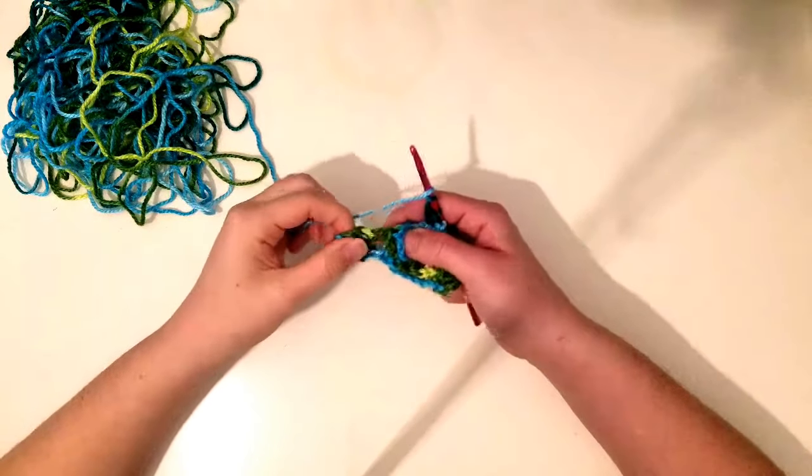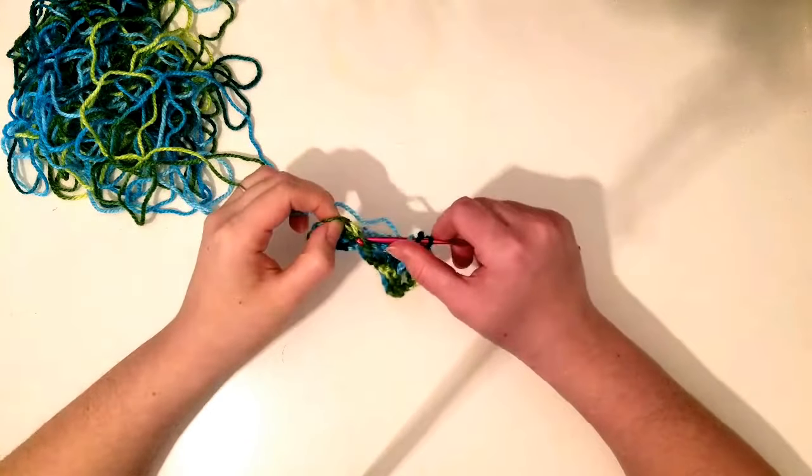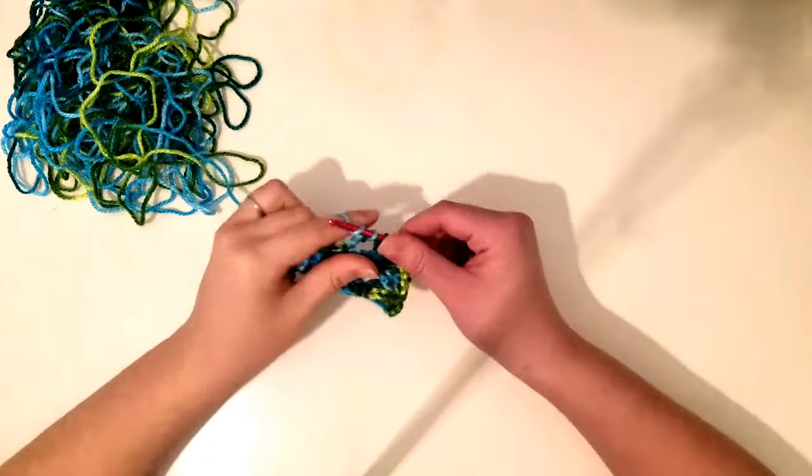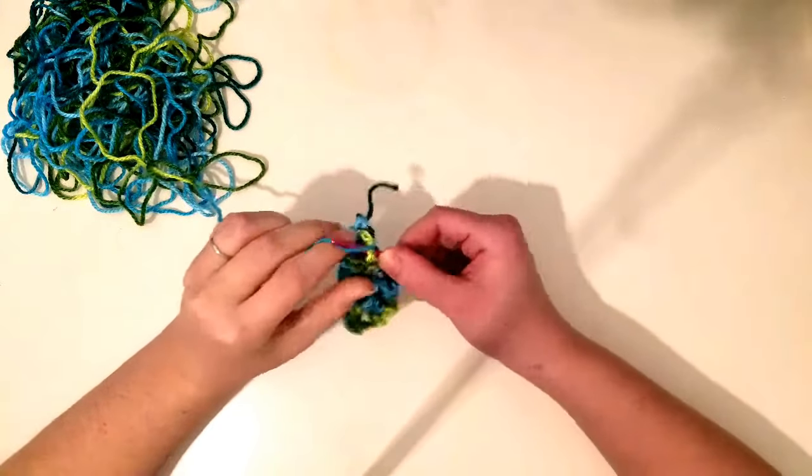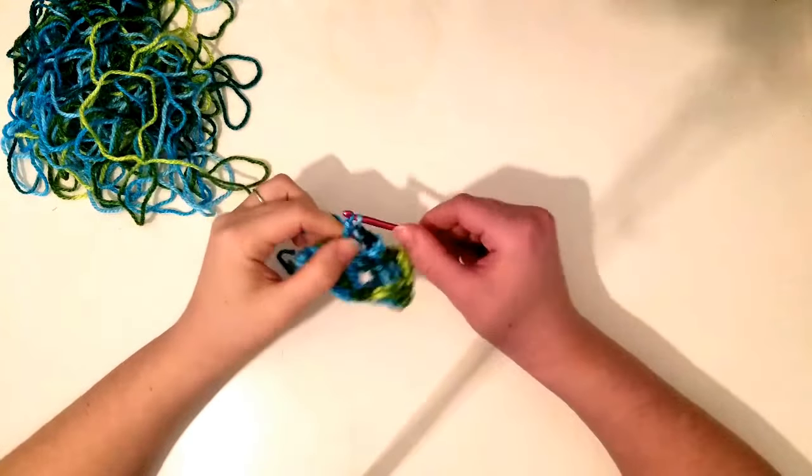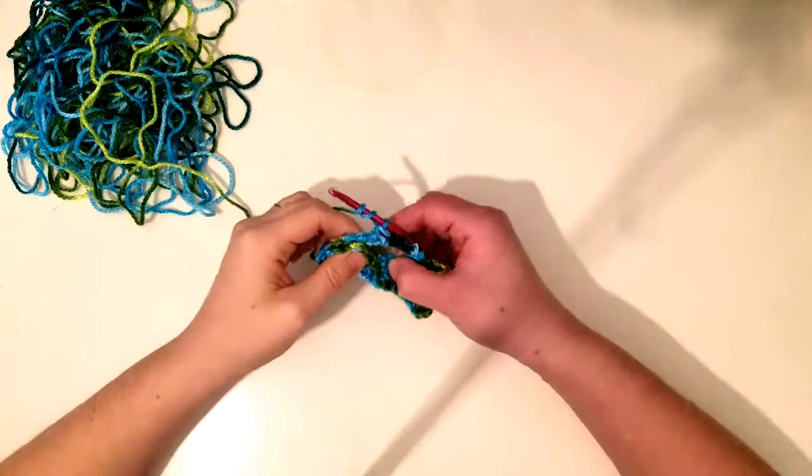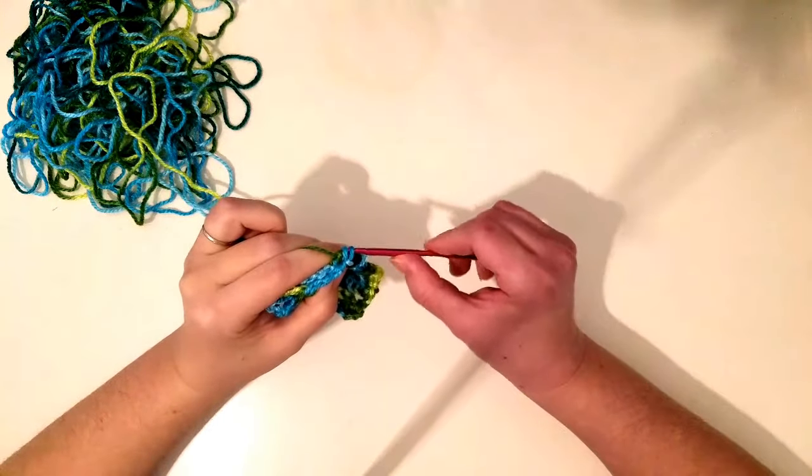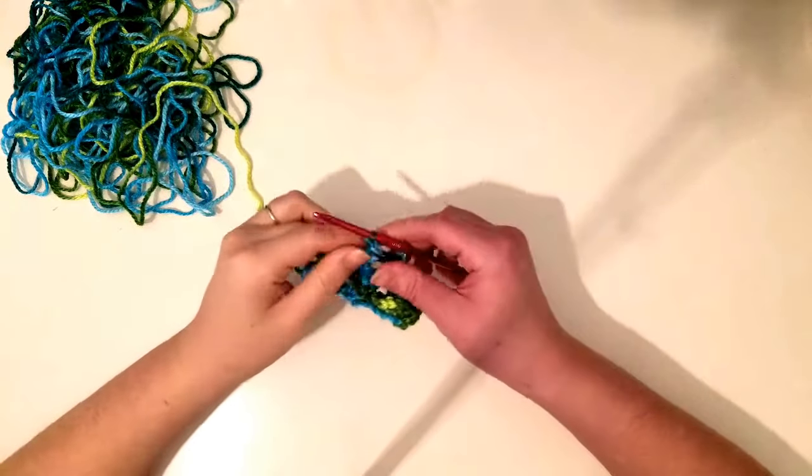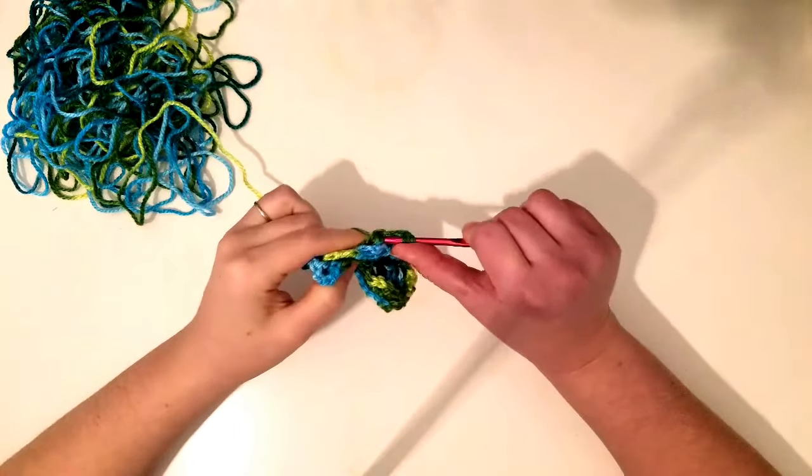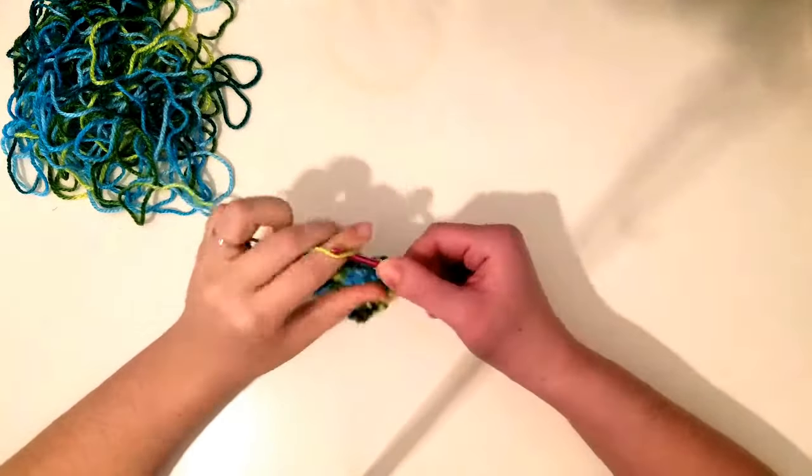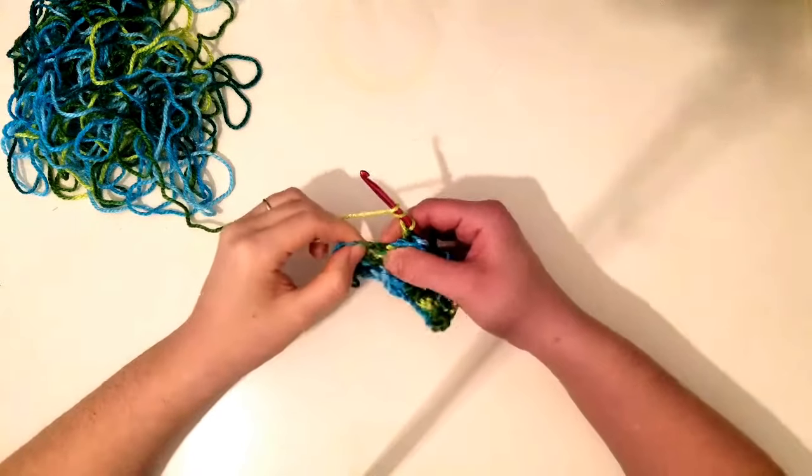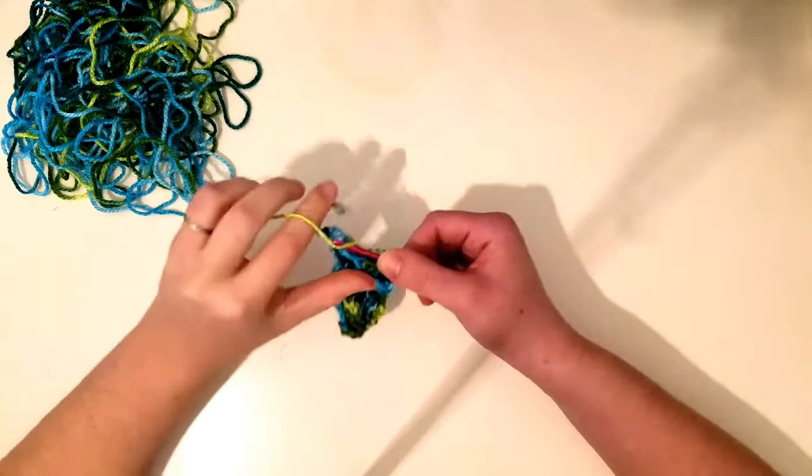And then your second set is going to be these two and the ones that were in the back of these ones. So grab right here, do your back post triple crochet, go through your twos. And then back post for one and two.